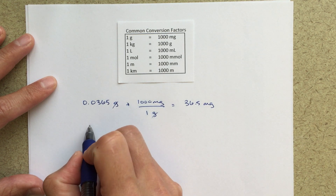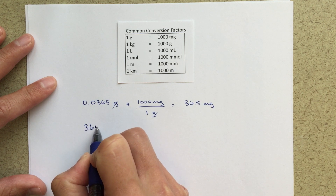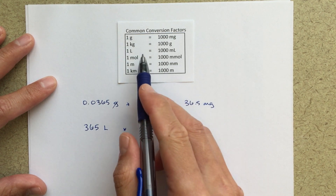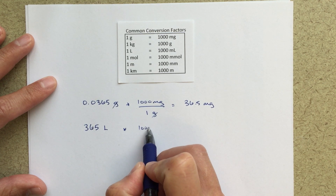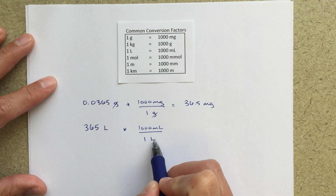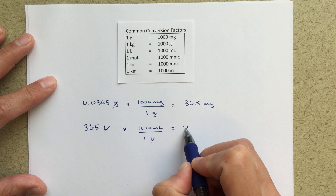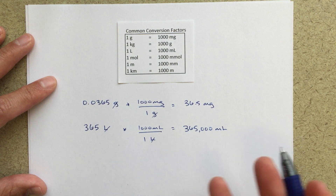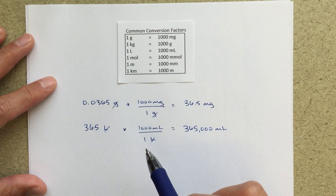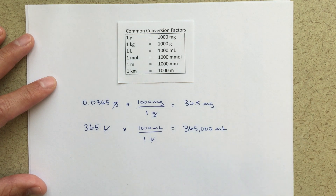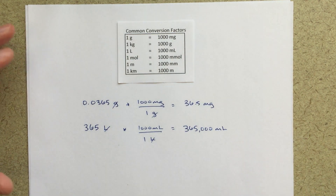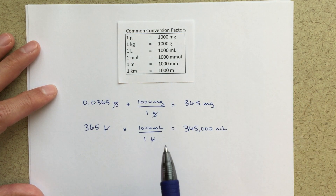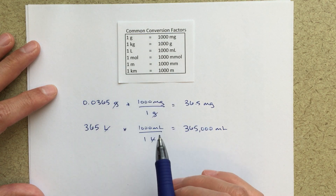Say we have 365 liters and we want to convert that to milliliters. Again using the conversion factor, 1,000 milliliters over 1 liter — putting milliliters on top so the units of liters cancel — gives us 365,000 milliliters. That's a lot of milliliters, but that's how we use these conversion factors. At the bottom of the table I also have meters and millimeters: 1 meter is about a yard and equals 1,000 millimeters, and 1,000 meters equals a kilometer.